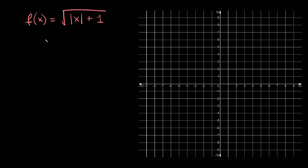Whenever you graph a square root function it's always the same steps — it doesn't matter if you have an absolute value in there or not. The first thing we have to do is take whatever is underneath the square root, or underneath the radical. So that's the absolute value of x plus 1. That's what's underneath the radical, and you're going to simply set that greater than or equal to 0.